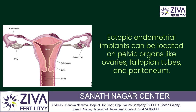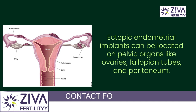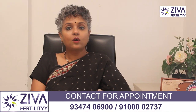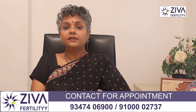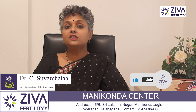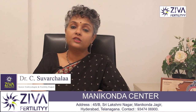These implants can be found on various pelvic organs including the ovaries, fallopian tubes and the peritoneum. Like normal endometrial tissue, these implants respond to hormonal changes during the menstrual cycle — thickening, breaking down and bleeding.